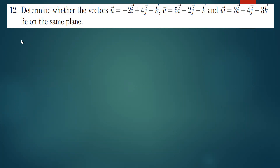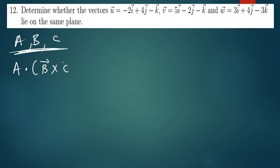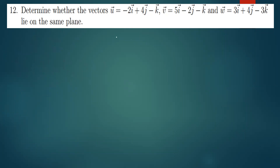If you have three vectors a, b, and c, and these three vectors lie on the same plane, it means that a dot (b cross c) is supposed to give you zero. So a dot (b cross c) should give you zero. Writing this in terms of u, v, and w: u dot (v cross w) should give you zero.